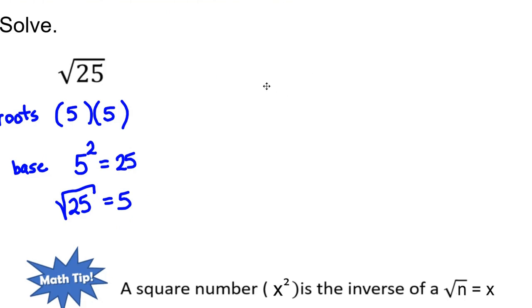If I want to look at it from a geometric point of view, I know that the number, the radicand, is 25. That is going to be the area of the square. So this square has 25 square units.